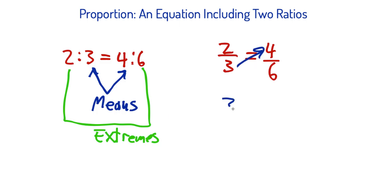So basically we're saying three times four should equal, going now to the product of the extremes, two times six. So 12 equals 12 and you're like, okay, cool.